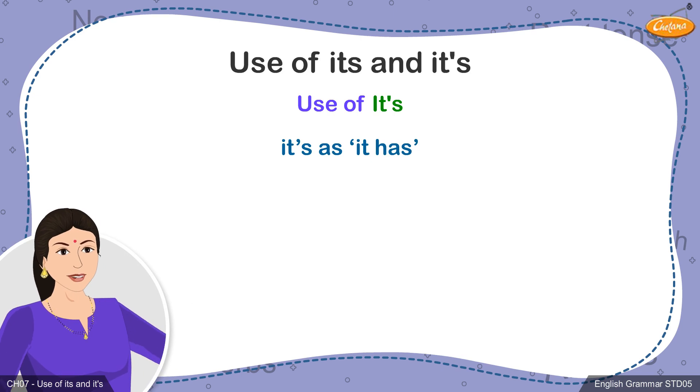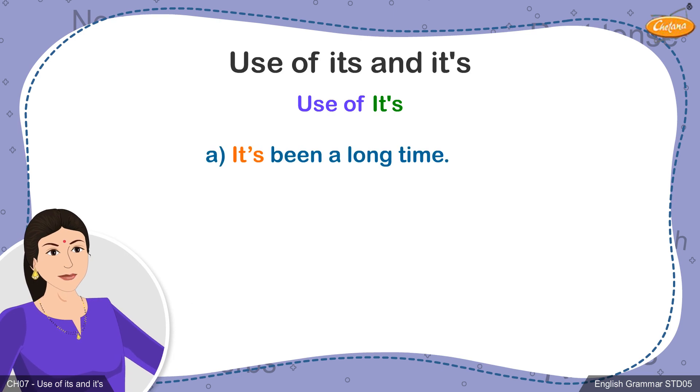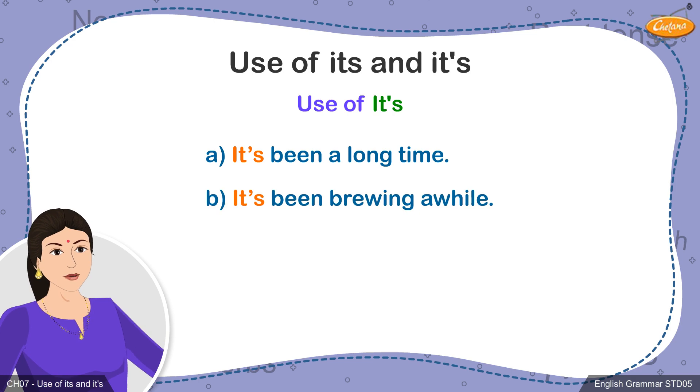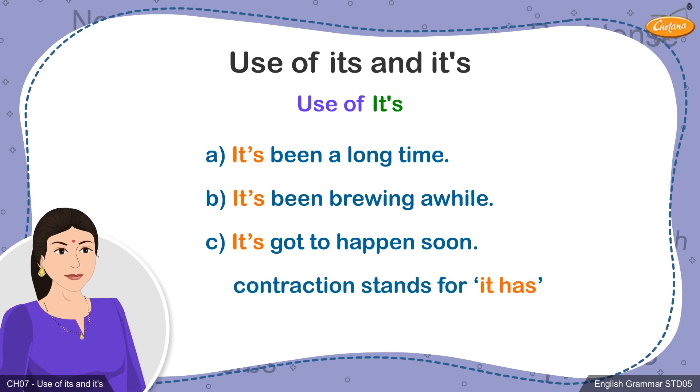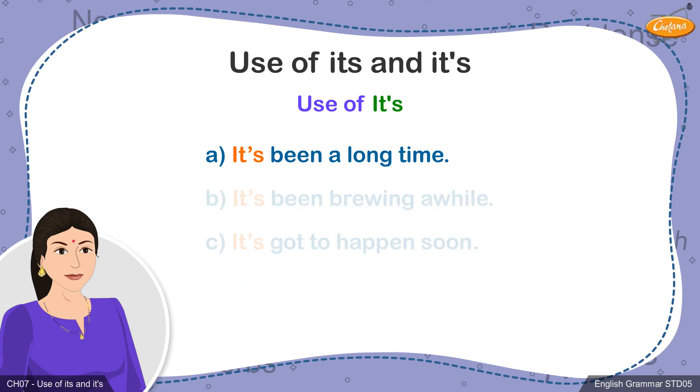we can also use it's as it has in some sentences. For example, A. It's been a long time. B. It's been brewing a while. C. It's got to happen soon. Here, the word contraction stands for it has. Hence, the sentences can be read as, It has been a long time, or It's been brewing a while.